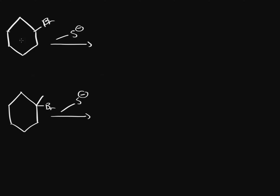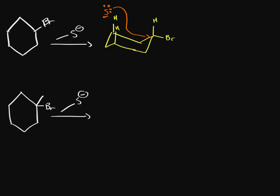What about this next reaction with a cyclohexane and a strong nucleophile? There's not all that much steric hindrance, but we need to look at the conformation to determine the best way for sulfur to attack. If we draw the cyclohexane with bromine in the equatorial position and hydrogens axial, and the sulfur tries to do a backside attack, it would have to go through the electron cloud — through the middle of the molecule — which creates a lot of steric hindrance.